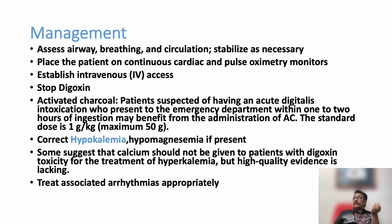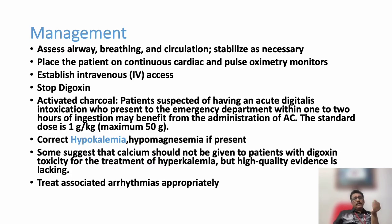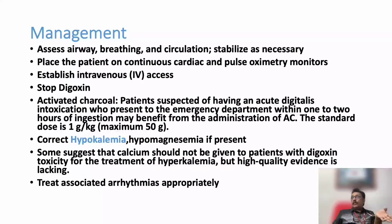Activated charcoal can be given in patients with overdose — for example, if a patient already on Digoxin has taken five or six tablets together. Activated charcoal is useful in acute toxicity with overdose at one gram per kg, but may not be very useful in chronic Digoxin toxicity. Correct electrolyte imbalances — hypokalemia and hypomagnesemia must be corrected. Many patients can also have hyperkalemia. Recent evidence shows that calcium gluconate can be safely given even in Digoxin toxicity with hyperkalemia, unlike previous guidelines that advised avoiding it.